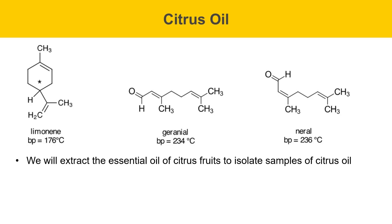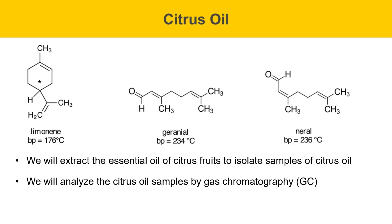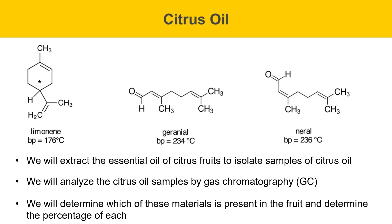In this experiment, we'll extract the essential oil of citrus fruits and isolate samples of citrus oil. We'll analyze the citrus oil samples using gas chromatography, or GC. This is a new type of chromatography that we'll be using for the first time. We will determine which of these materials is present in the fruit and determine the percentage of each. Gas chromatography will allow us to do that.